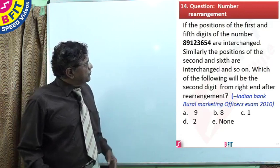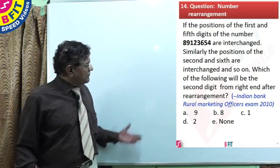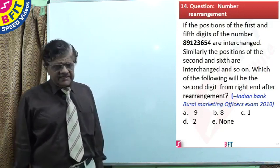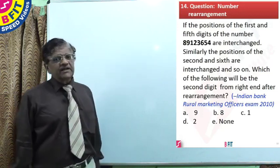Similarly, the positions of the second and sixth are interchanged and so on. Which of the following will be the second digit from the right end after rearrangement?